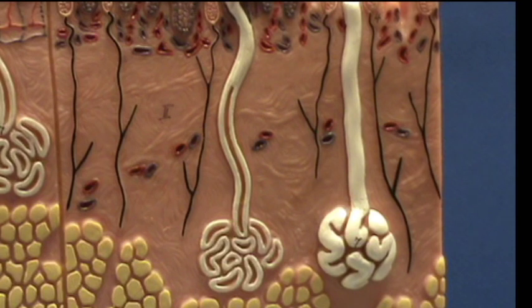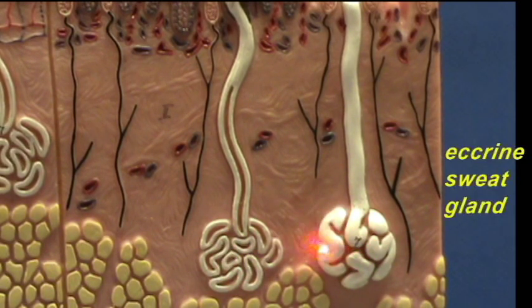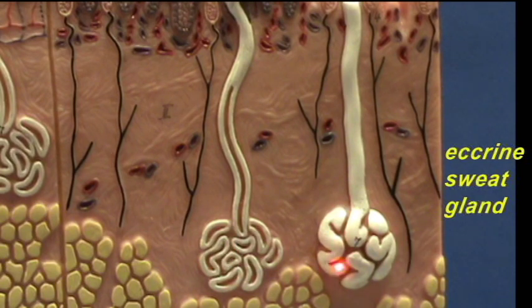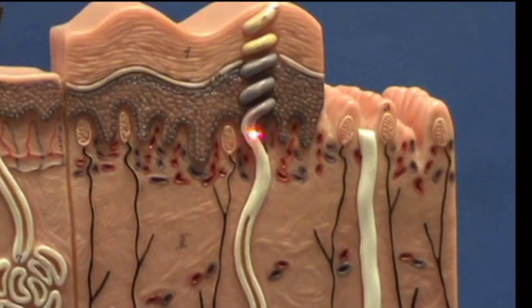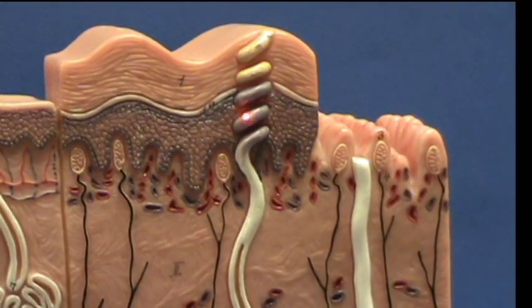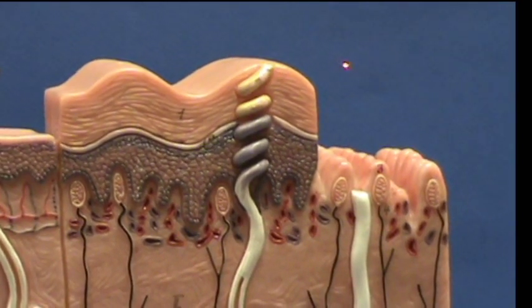Here you can see these two sweat glands. These are the most common type of sweat gland — this is the eccrine sweat gland. It produces a very watery secretion. You can see that the secretory part of the gland is right over here, where this tube is highly coiled. The secretions will be dumped into a duct which will ascend, coiling through the thick epidermis that you find in the sole of the foot, and opening up at the surface at a pore.